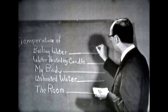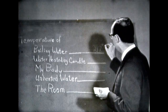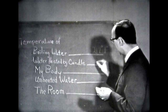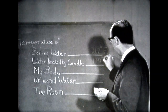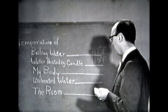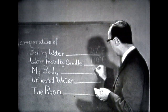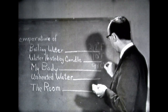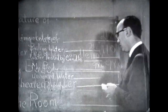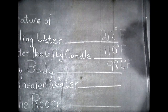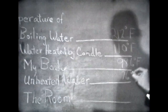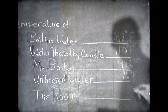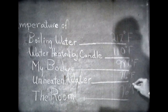The temperature of the boiling water was about two hundred and twelve degrees Fahrenheit. The water heated by the candle was about a hundred and ten degrees Fahrenheit. The temperature of my body was about ninety-eight point six degrees Fahrenheit. The temperature of the unheated water next to the test tube was about seventy-six degrees Fahrenheit, and the temperature of the room was also about seventy-six degrees Fahrenheit.